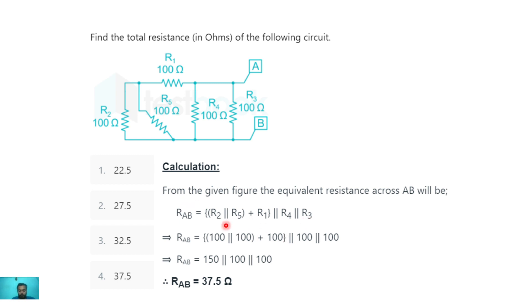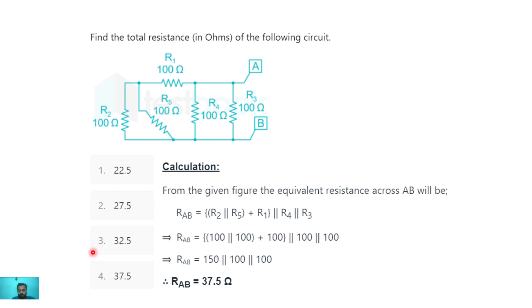On calculating, we get the value of R_AB as 37.5 ohms. So the total resistance of this circuit is 37.5 ohms, and the correct option is option 4.